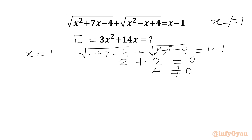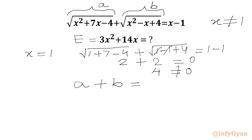Now we will use substitutions. Let the first square root be a and the second square root be b. So our first equation is a plus b equal to x minus 1. Since x cannot be 1, we can say a plus b cannot be equal to 0. Let us call this equation number 1.